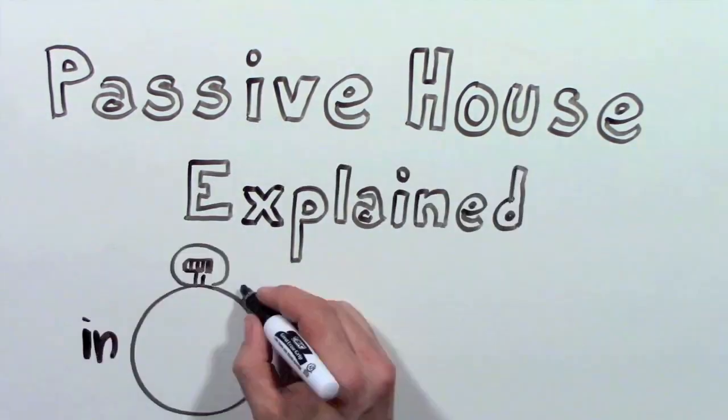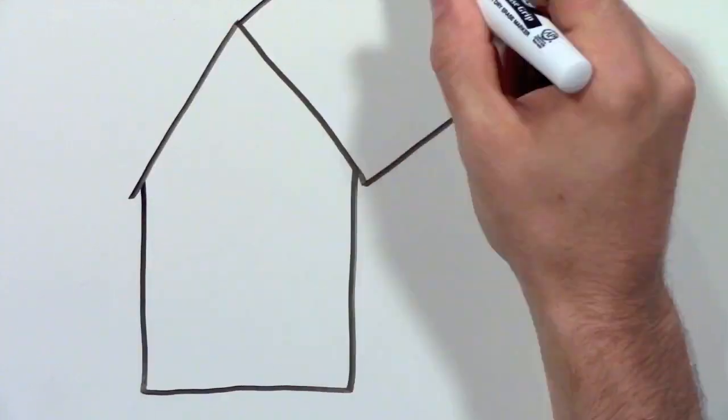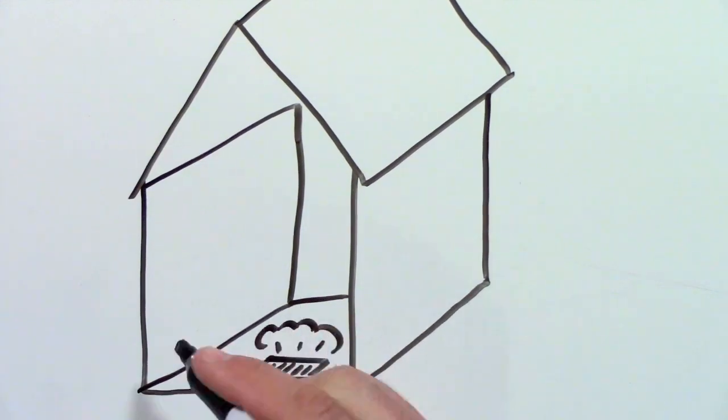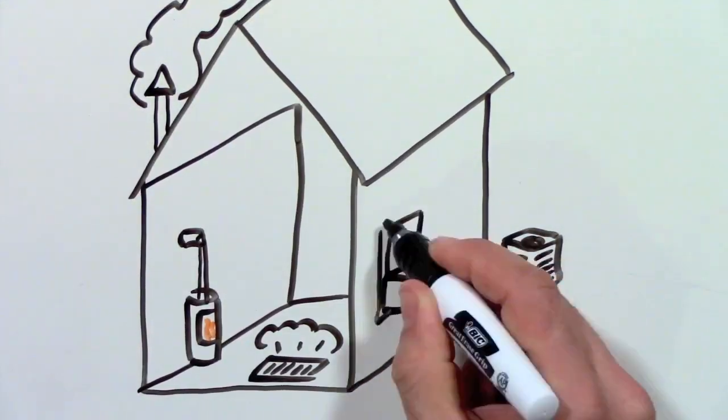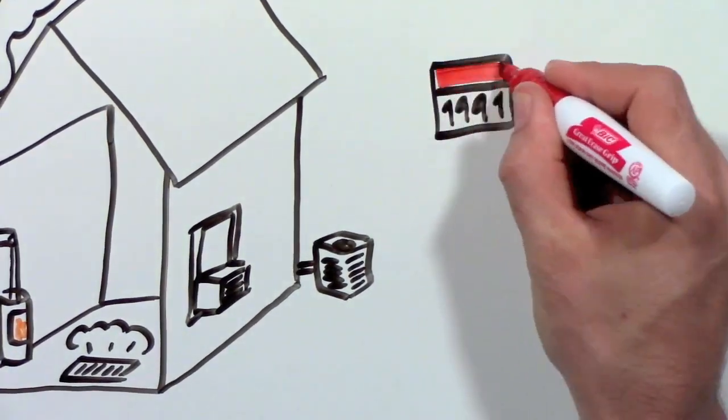Passive House explained in 90 seconds. Does your house have a heater in the basement or maybe a fireplace? Probably also a central air conditioner or maybe a window unit. Did you ever wonder if it was necessary?